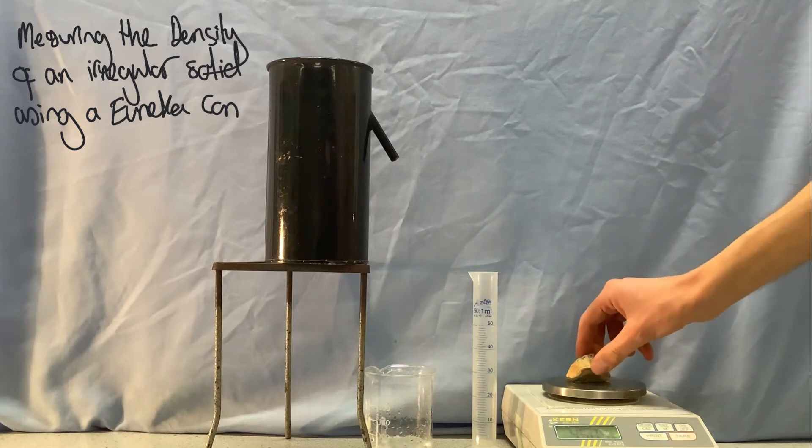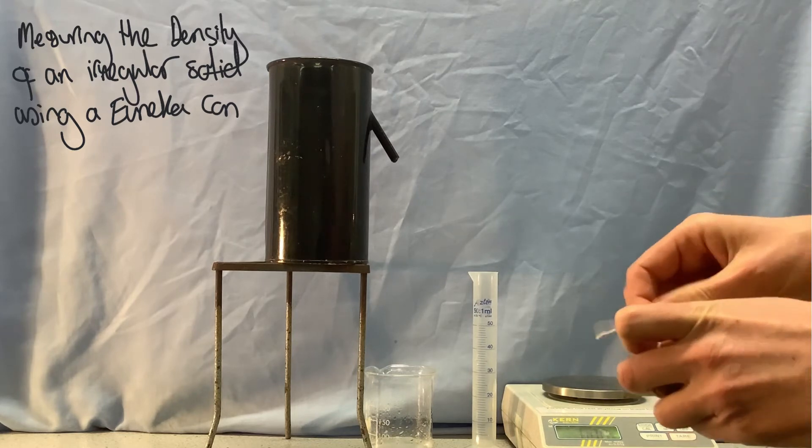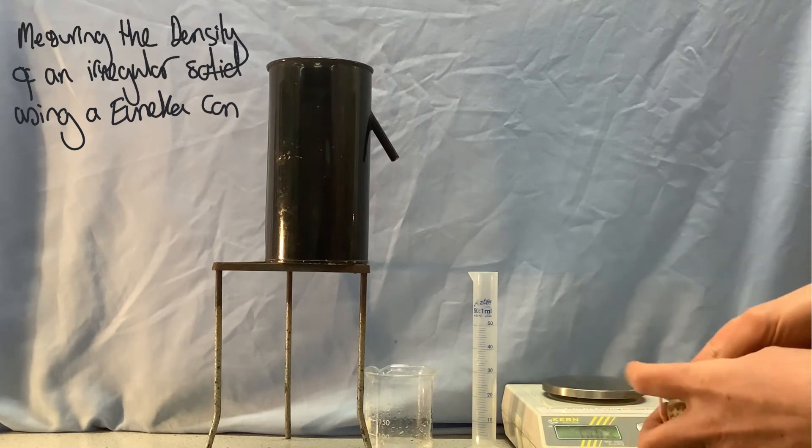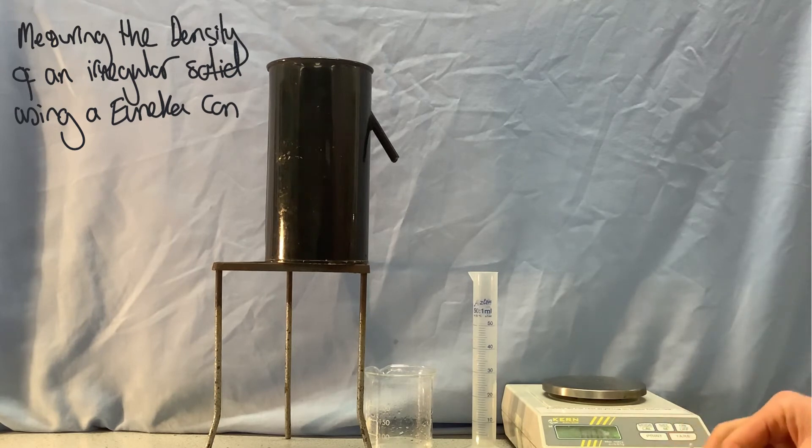Whilst that's dripping out, I can get a piece of string to tie around my irregular shaped rock. And once I have done that, hopefully the dripping will just about have finished.